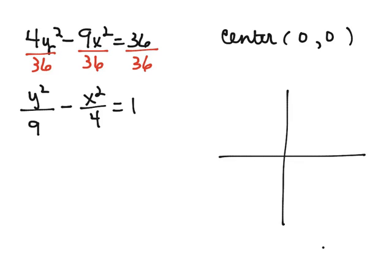And from that center, we're going to go up 3 and down 3, because we're going to take the square root of 9. And we're going to go right 2 and left 2 from our center.